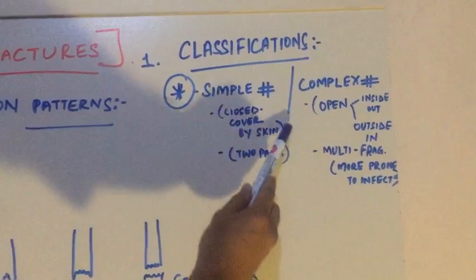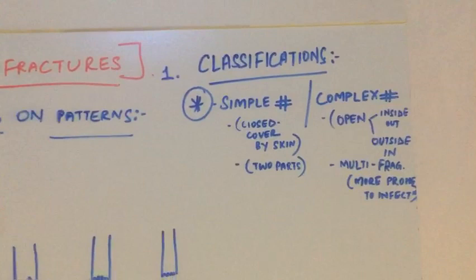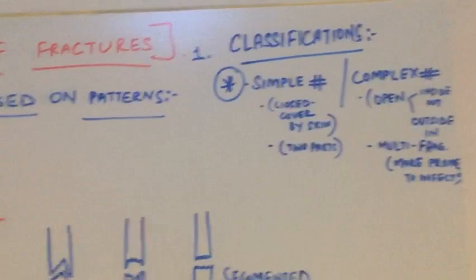Now this type of open trauma or complex fracture is more prone to infection. Simple fracture having a good skin cover and good soft tissue cover is less prone to infections. Coming to a different type of classification, classification which is based on displacements.